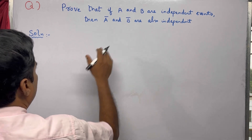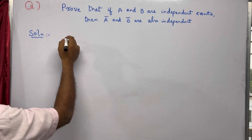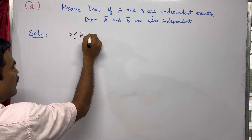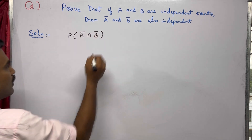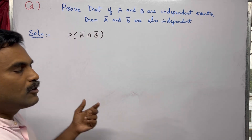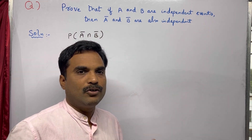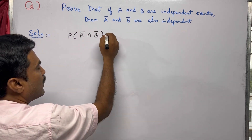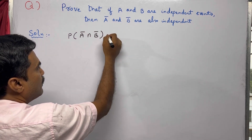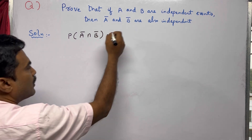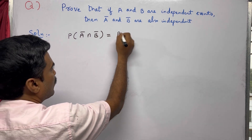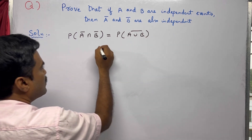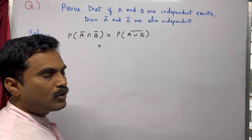To prove this, first write the left-hand side: P(A-bar ∩ B-bar). We need to derive that this equals P(A-bar) · P(B-bar) to show that A-bar and B-bar are also independent. By De Morgan's law, A-bar ∩ B-bar = complement of (A ∪ B), so we can write P(A-bar ∩ B-bar) as P(A ∪ B) whole bar.